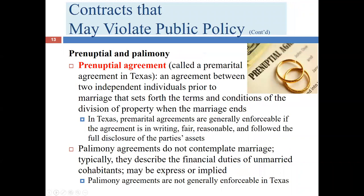Now we're ready to talk about premarital or prenuptial agreements and palimony-type agreements. In Texas, we use the term premarital agreement rather than prenuptial, but it's the same thing. A premarital agreement is an agreement between two independent persons prior to marriage that sets forth the terms and conditions of the division of property when the marriage ends, either through divorce or death.